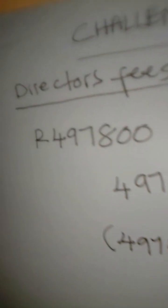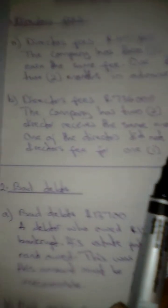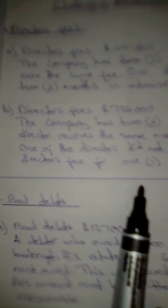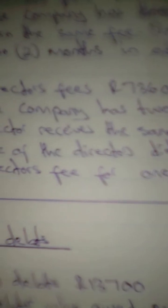I'm going to do another one again on B. B is saying, director's fees that are given is $736,000. The company has two directors. Each director receives the same monthly remuneration. One of the directors did not receive this director's fee for one month. How many directors do we have? Two. We'll do more or less like the same calculation.